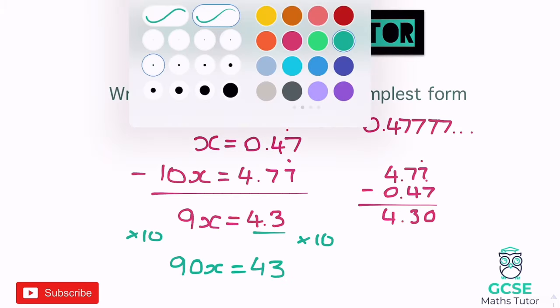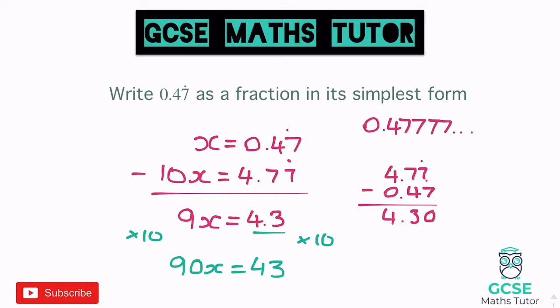Now we can turn that into a fraction. We've got 90 in front of x, so we divide both sides by 90. It's important to leave this in terms of algebra because some questions will say 'prove'. So x equals 43 over 90. It does say give it in its simplest form — 43 over 90 doesn't simplify. Worth checking: are they both even, do they divide by 3 or 5? But as I've done this question, it has finalised in its simplest form.